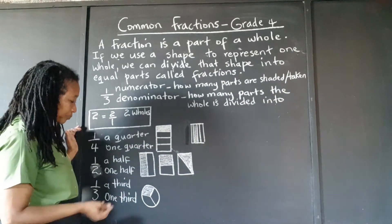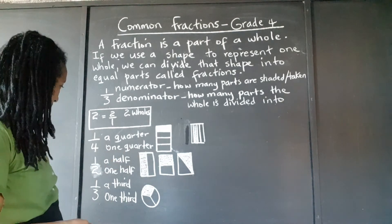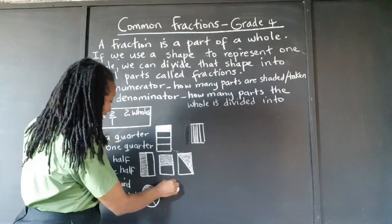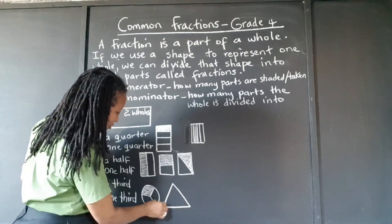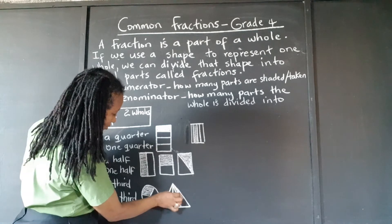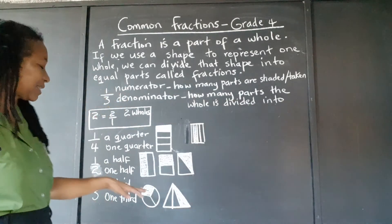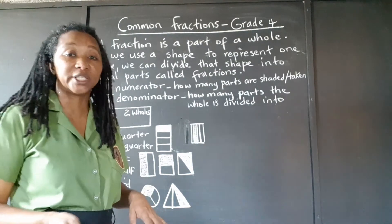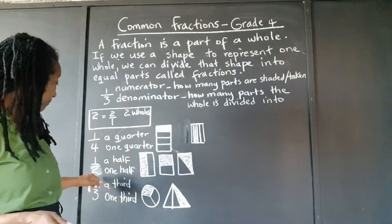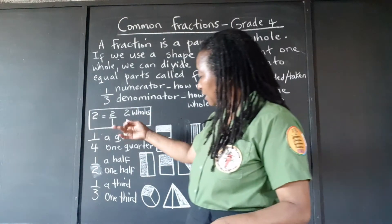Which other shape could we use to represent one third? We've had rectangles, squares, and circles. Could we use a triangle and get equal parts? It's difficult to get three equal parts with a triangle — pretty difficult, depending on the type of triangle. The basic idea is: whichever shape you choose, you must be able to cut it into equal parts. The denominator tells you how many equal parts, and the numerator tells you how many of those parts you're going to shade or remove.